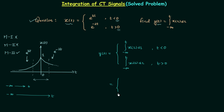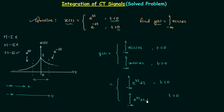Now let's perform the integration using the definition given in the problem. When t is less than 0, X(τ) = e^(3τ), so we have the integral from minus infinity to t of e^(3τ) dτ. When t is greater than 0, the barrier is included, so we first integrate from minus infinity to 0 with definition e^(3τ), giving the integral of e^(3τ) dτ, plus we integrate from 0 to t where the signal is defined by e^(-2t), giving the integral of e^(-2τ) dτ.